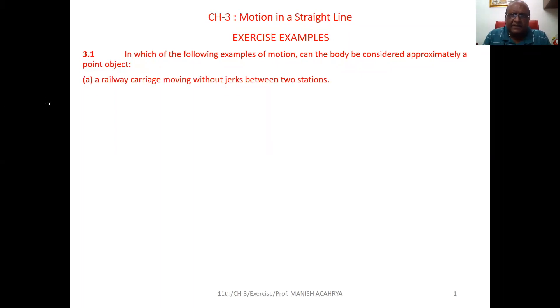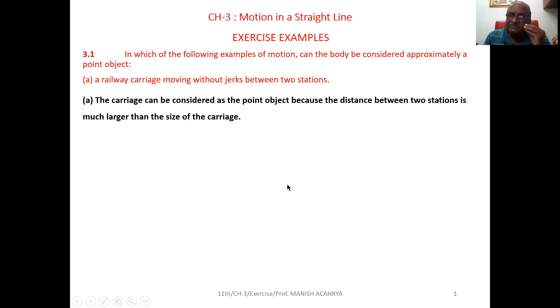First thing, question A. A railway carriage moving without jerk between two stations. Now, see, the railway carriage no doubt is a big one but compared to something, something that is between two stations. The distance between two stations is very large compared to the size of carriage. In this particular case, the carriage can be considered as a point object.